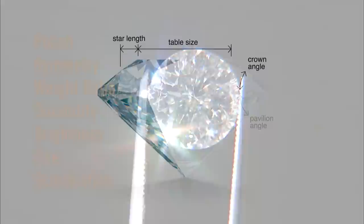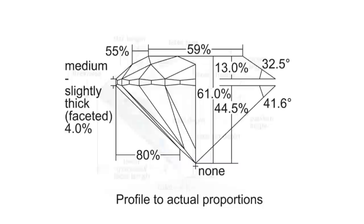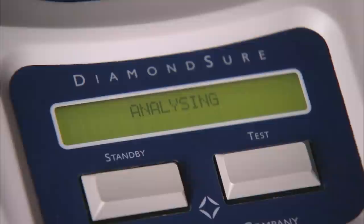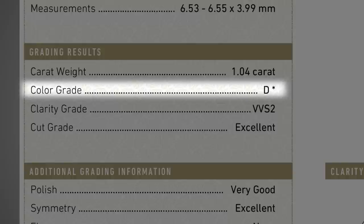The diamond's dimensions are thoroughly described, from its shape and cutting style to its precise measurements. A diagram shows the diamond's profile and its proportions. A description of fluorescence is provided as an additional identifying characteristic. GIA tests every diamond to verify that it is natural and to identify any processes that may have been used to alter its color or clarity.